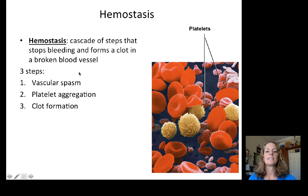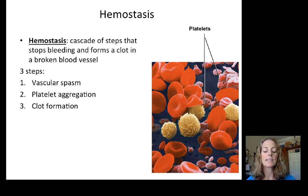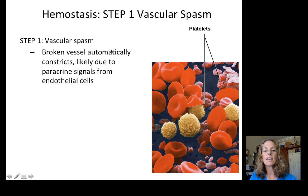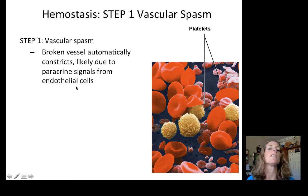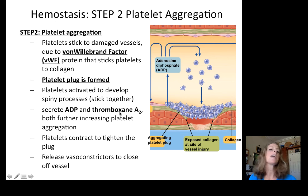Hemostasis is the cascade of steps that stops bleeding and forms a clot in a broken blood vessel — a natural response to injury. It has three steps: vascular spasm, platelet aggregation, and clot formation. First, a break in a blood vessel automatically constricts the vessel, likely due to paracrine signals released from damaged endothelial cells.